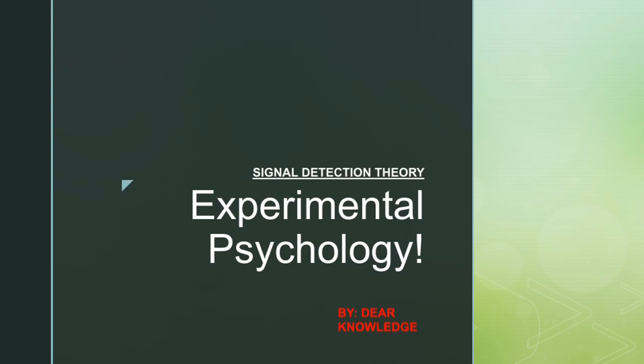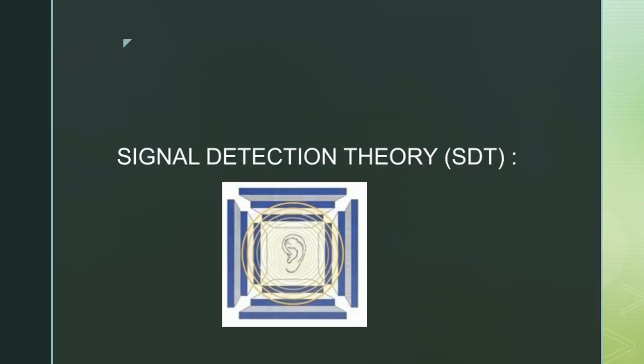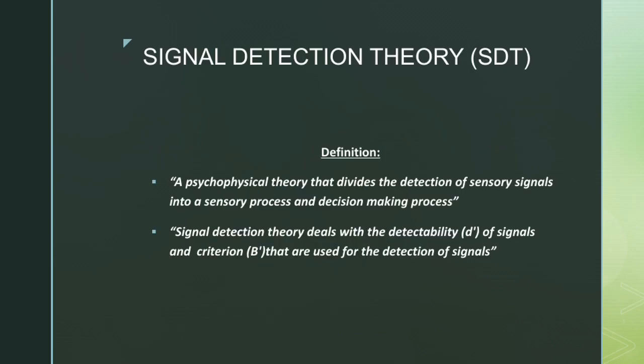Assalamu alaikum everyone, today we will study signal detection theory in experimental psychology by dear knowledge. Signal Detection Theory, the abbreviation is SDT. The definition of signal detection theory includes a psychophysical theory that divides the detection of sensory signals into a sensory process and decision making process.